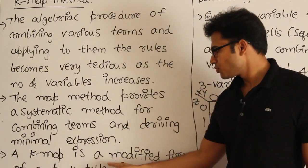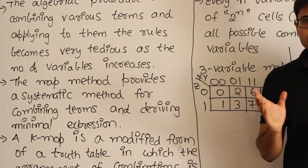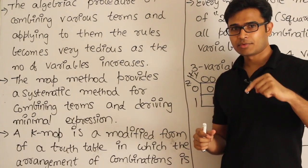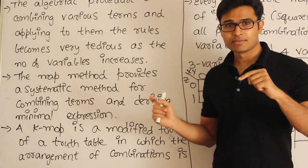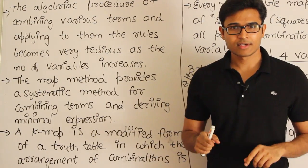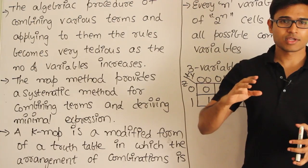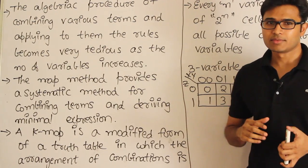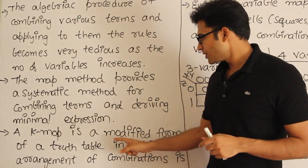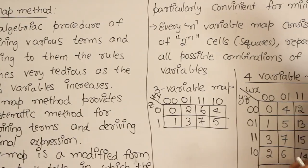A K-map is a modification of the truth table. K-map is actually a kind of truth table because in a truth table, we find out all the combinations and then assign the truth value. Similarly, in a K-map, for every combination there will be a designated cell, and in that designated cell we write the truth value. Therefore K-map is a kind of truth table, even though it looks different. It is a truth table in which the arrangement of combinations is particularly convenient for minimization.